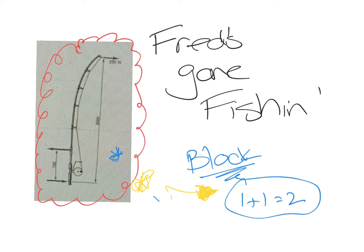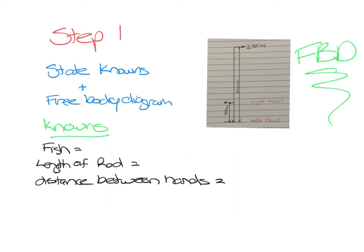So as prescribed, step one is literally stating the knowns. And I've added in there drawing a free body diagram. I want to get away from this fishing rod, I want to start seeing this as a math equation. So here I know that the fish itself is actually pulling on the rod at 250 newtons - says it in the question, and I've got it here in my picture. The length of the rod I know is 3 meters.